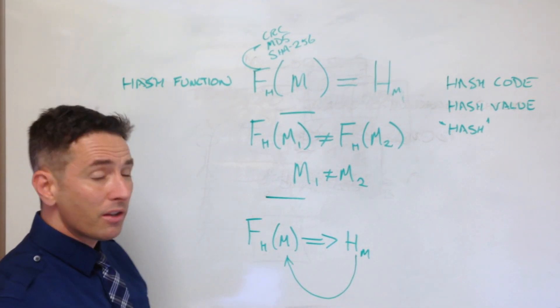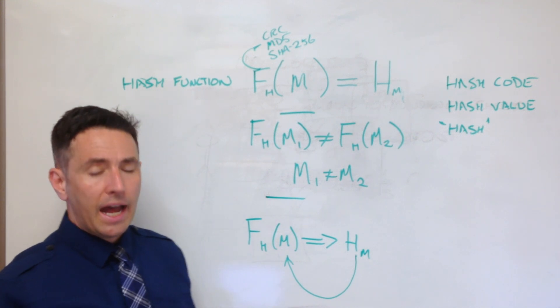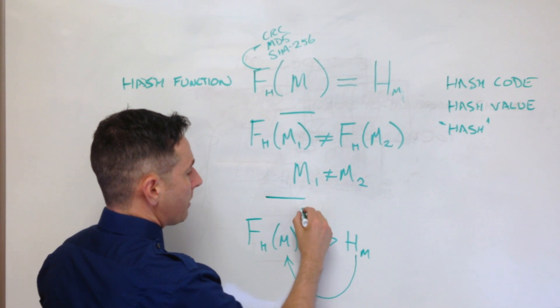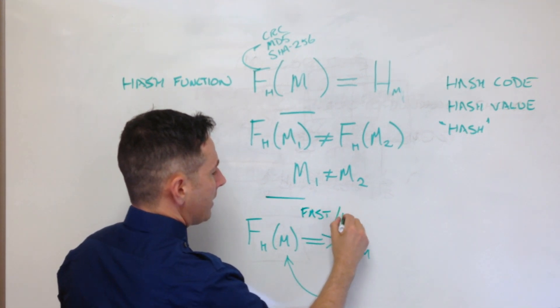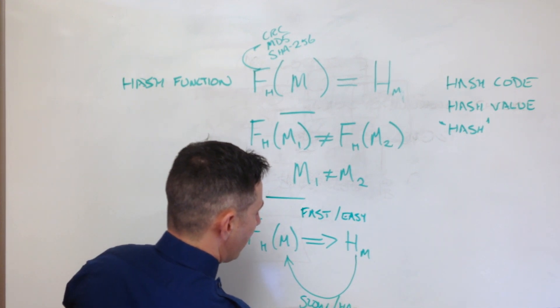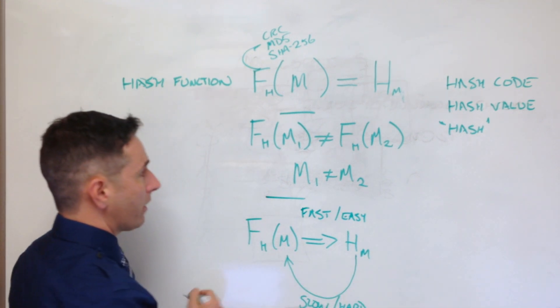So those are the properties, those are the key properties that you want of hash functions. I guess you could also say you want it to be fast and easy to go this way, and you want it to be slow and hard to go back the other way.